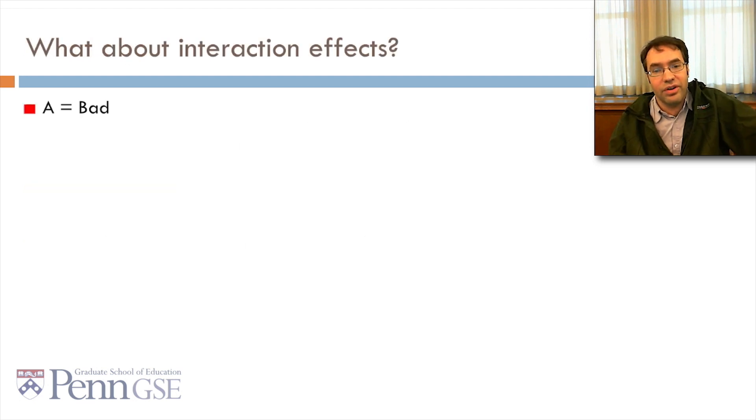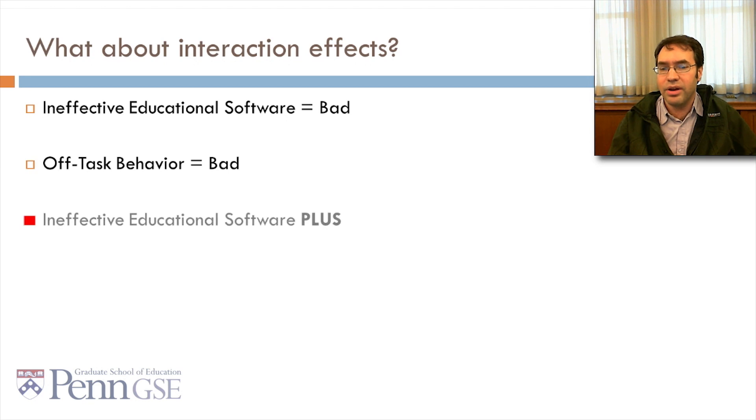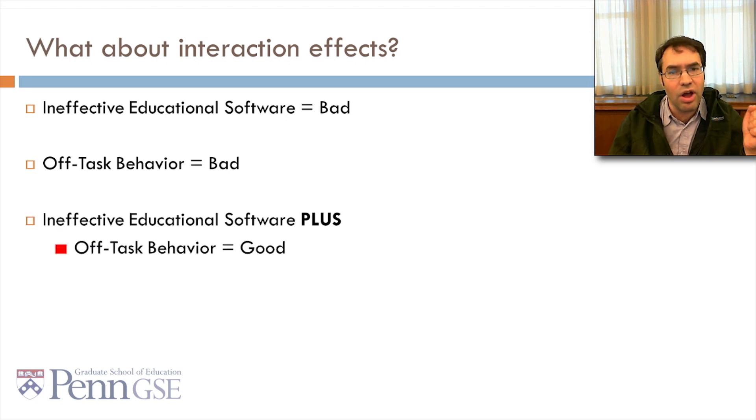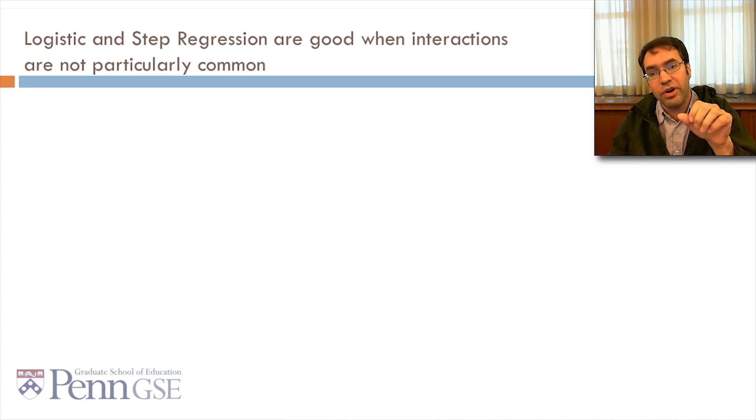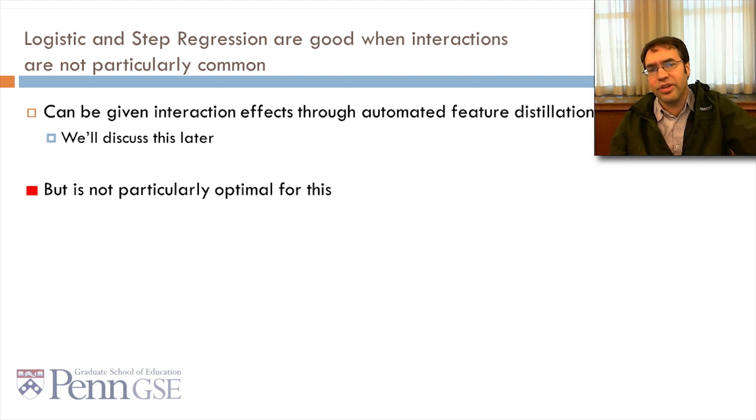What about interaction effects, in particular? You know, a is bad, b is bad, a plus b, that's good. And, there are some examples in the real world. Ineffective educational software is bad. And, going off task in class, ignoring what you're supposed to be doing is bad. But ineffective educational software plus off task behavior might actually be good, if the student is spending that off task behavior doing something more worthwhile. Logistic and step regression are good when interactions aren't particularly common. You can actually give them interaction effects through automated feature distillation, and we'll discuss this later in the class. But it's not really particularly optimal for this.